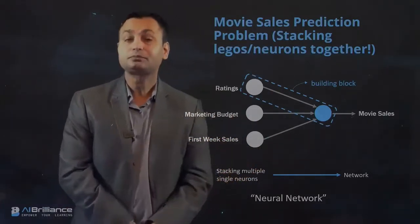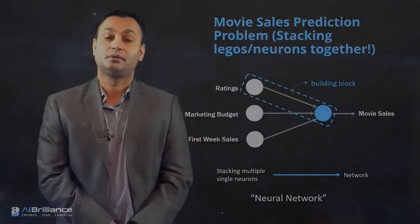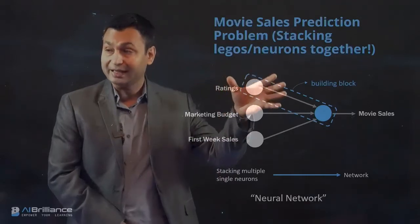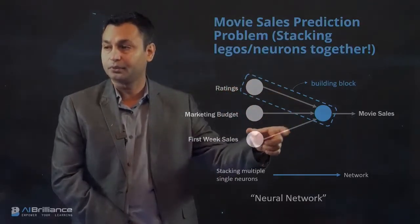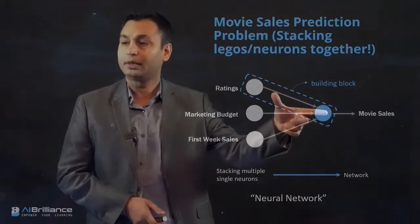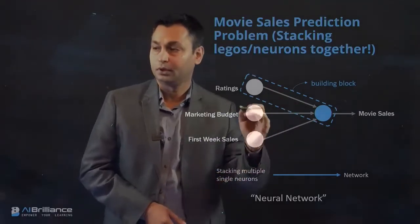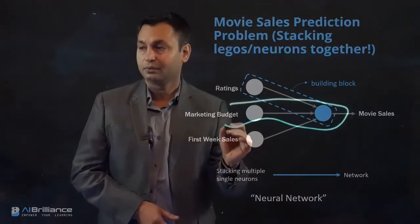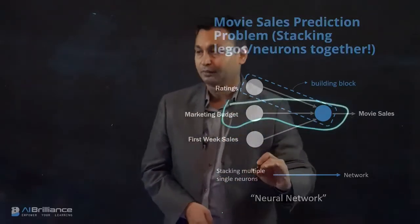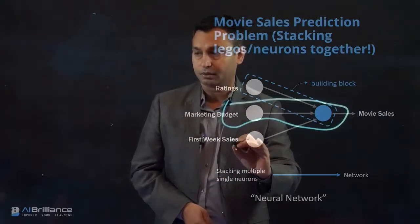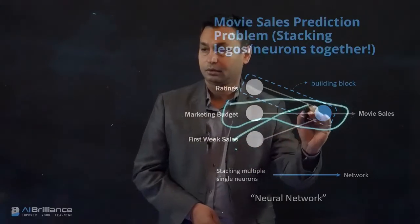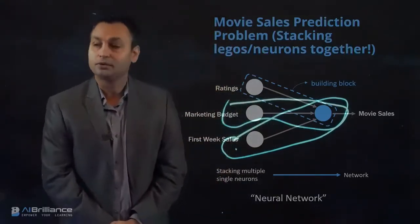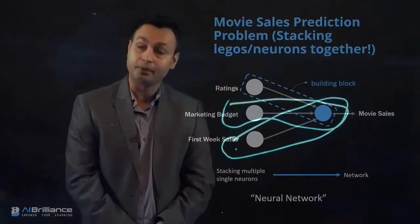To account for that additional feature in the neural network, we add another computational unit — another neuron. Stacking these units, we now have three computational units being used to predict what the final movie sales will be.